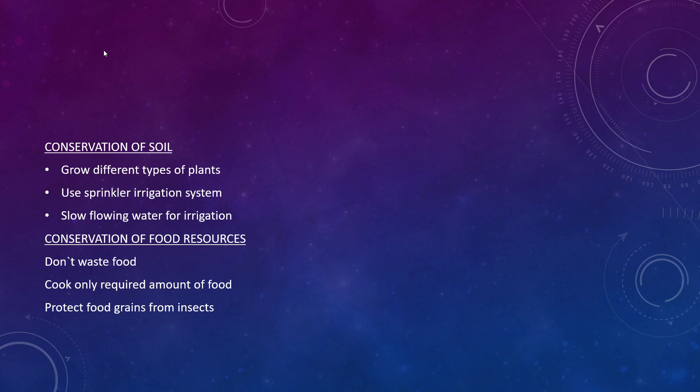Conservation of soil: we can conserve soil by growing different types of plants. We can use a sprinkler irrigation system and use slow-flowing water for irrigation so that the stored soil is not washed away.